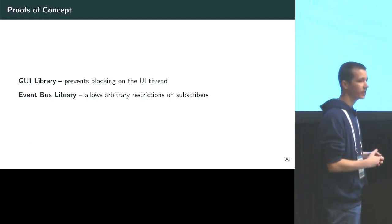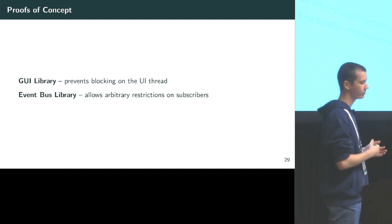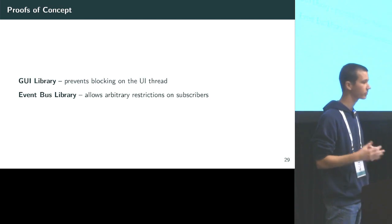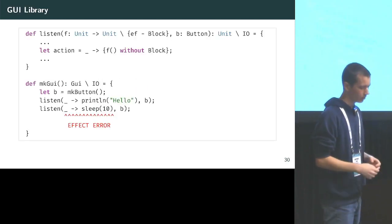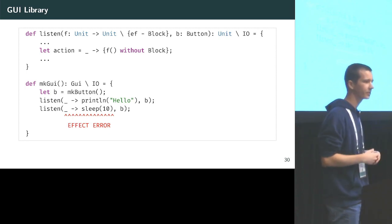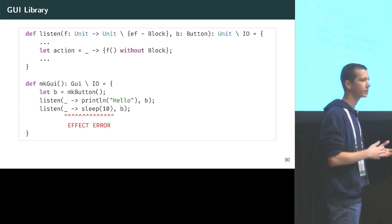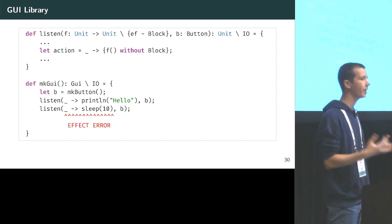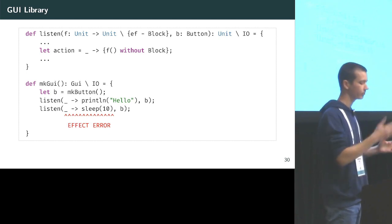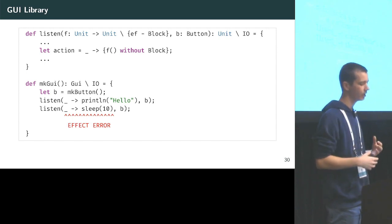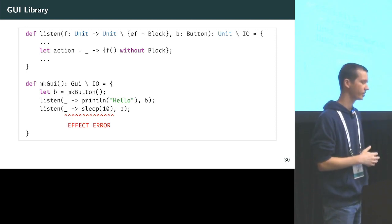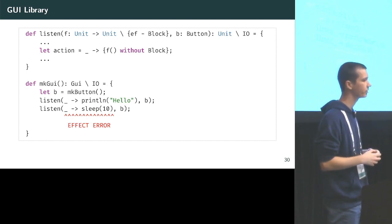In addition to the case studies, we have two proofs of concept. The first is a GUI library which prevents blocking on the UI thread, and the second is an event bus library allowing arbitrary restrictions on subscribers. The GUI library has a listen function whose body requires that the registered listener does not have the block effect. We can register a lambda that calls println — a non-blocking operation — but we cannot register a lambda that calls sleep, since that would block.